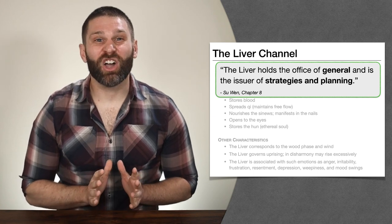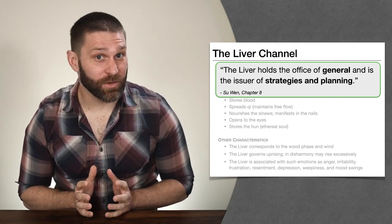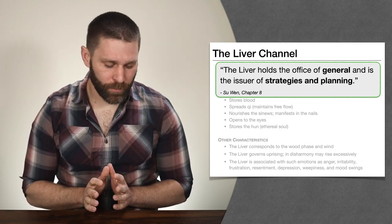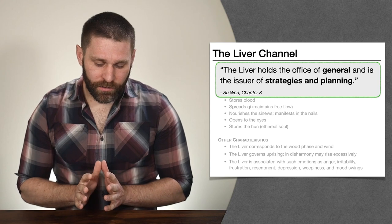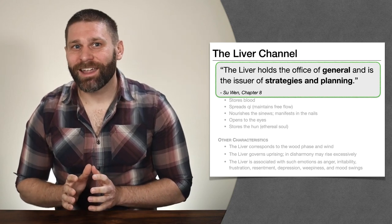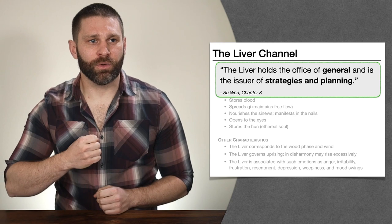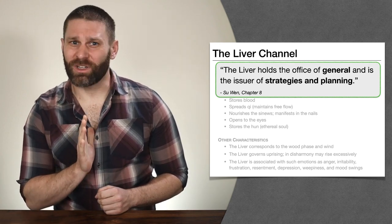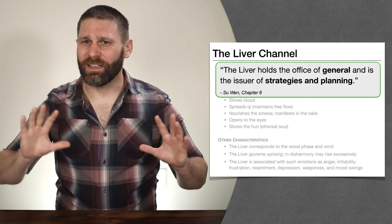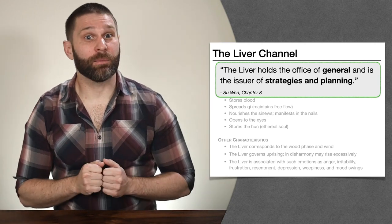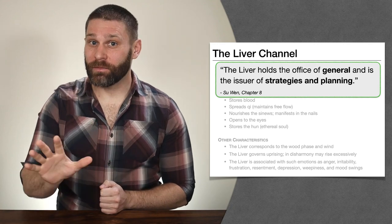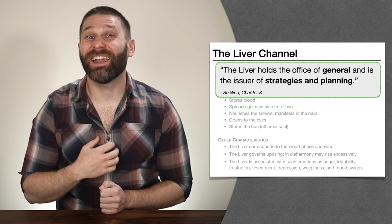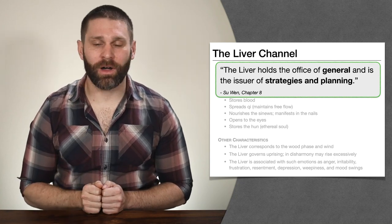When we think about the liver, we can think about a general commanding the troops — giving orders and telling people where to go. If our liver is good and in harmony, we can think about a general who's firm and resolute, but also relaxed and quiet, that even if there's all this chaos going around, he's able to keep his composure, give orders, have a proper plan and strategy, and has the courage to follow through with those plans.